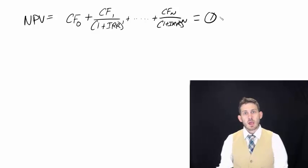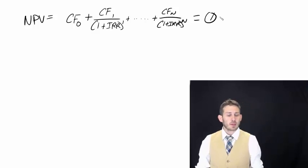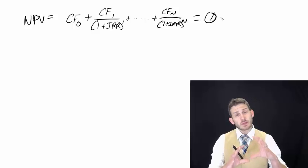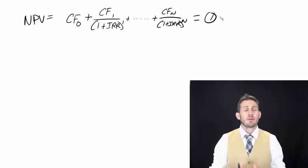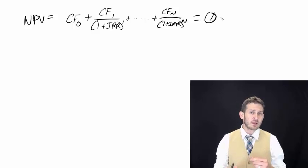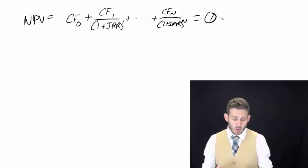And so what we're doing here is that we take our initial cash flow, we look at all our future cash flows, and then we set it equal to zero, and that essentially tells us where it's going to break even at our required rate of return.